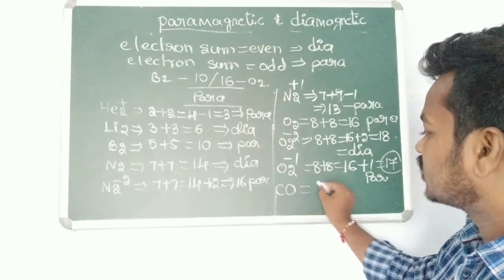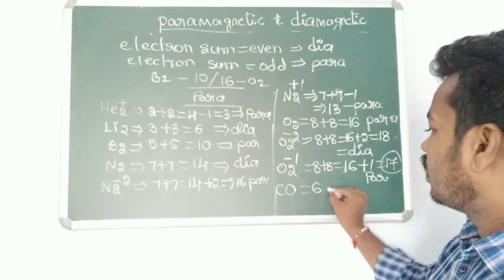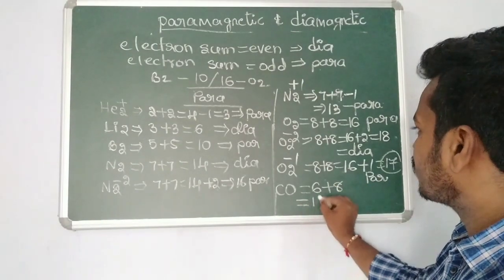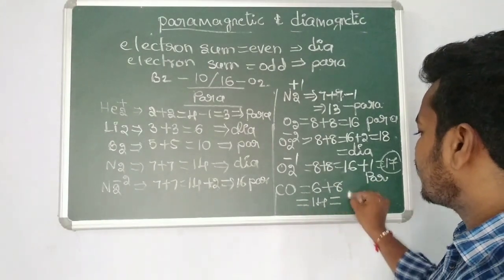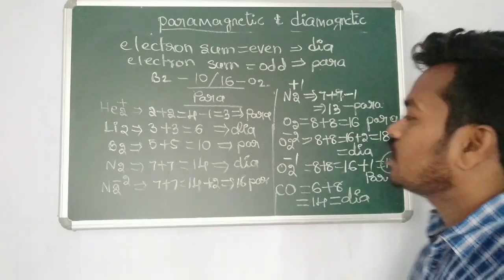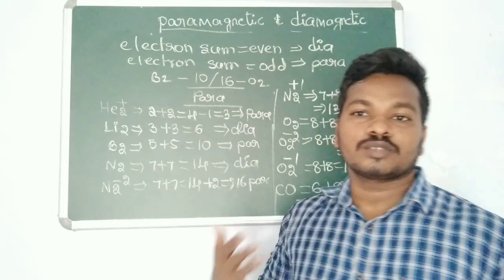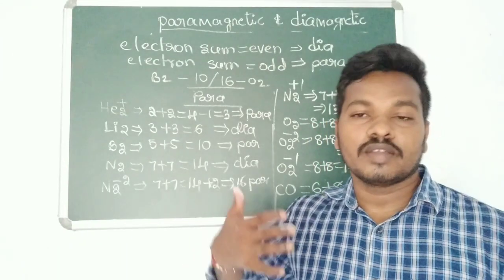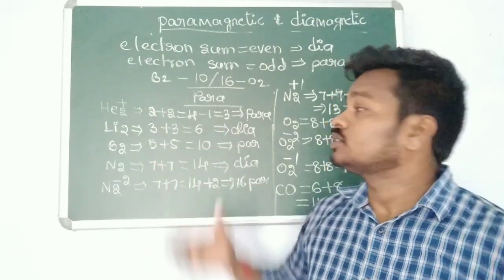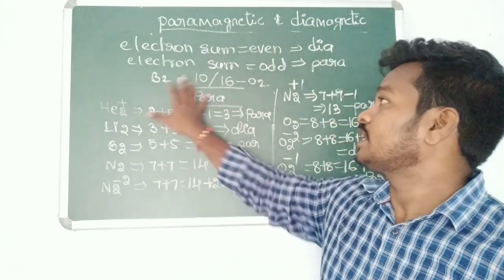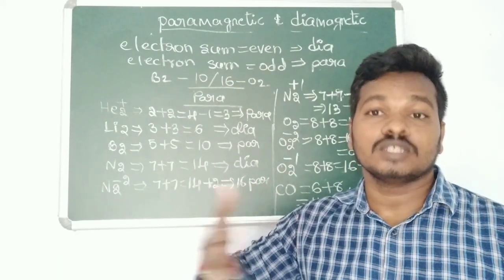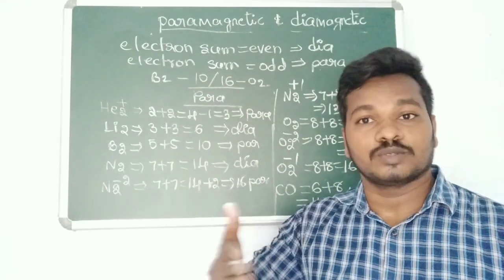Next, CO: carbon has atomic number 6 and oxygen has atomic number 8, so 6 + 8 = 14 electrons. 14 is an even number, so CO is diamagnetic in nature. These are the tricks to calculate different species using the electron sum method. Just remember that species with 10 or 16 electrons are always paramagnetic. Thanks for watching!